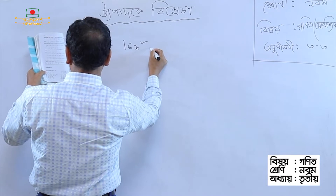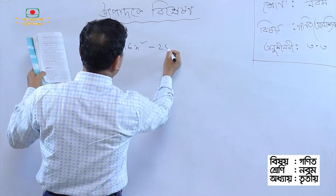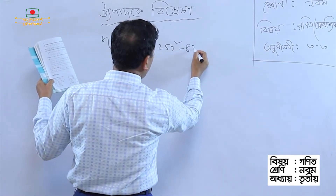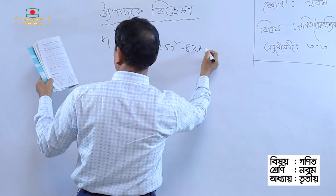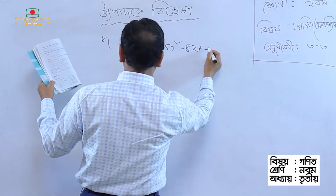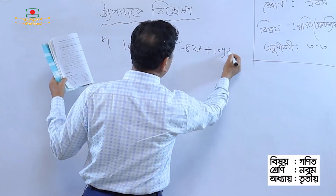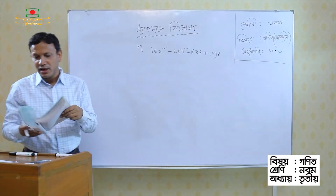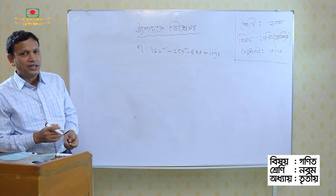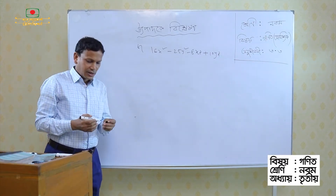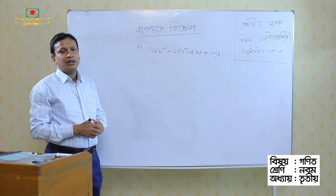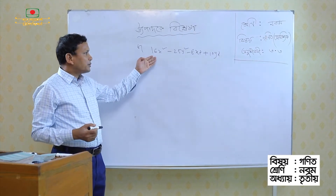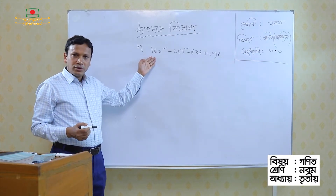6x squared minus 35y squared minus 8xz plus 10yz. That's our problem. We have to solve this problem.